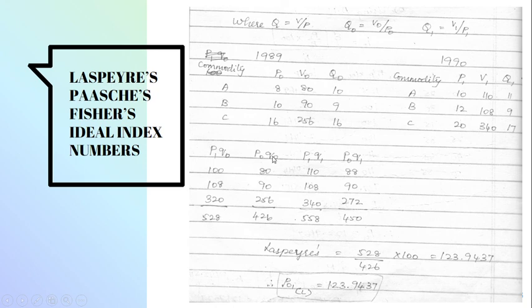Now P0Q0 is needed. So P0, the value of P0 is multiplied by Q0. 8 into 10, 80. 10 into 9, 90. 16 into 16, 256. The total of this is 426.